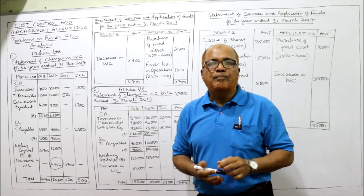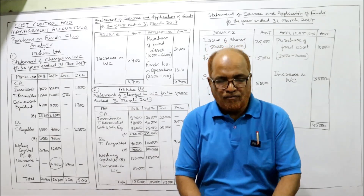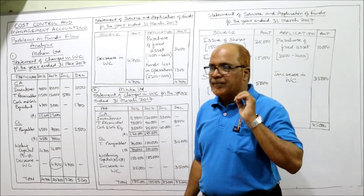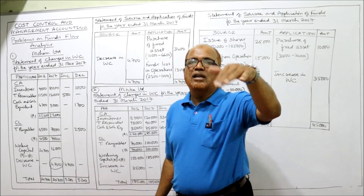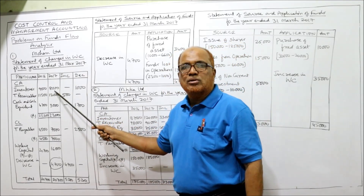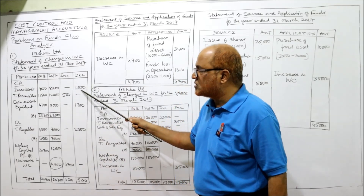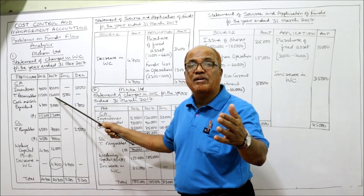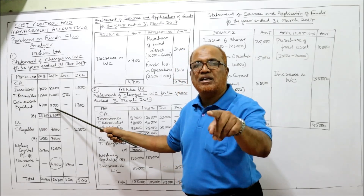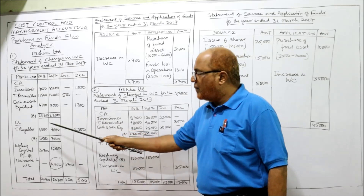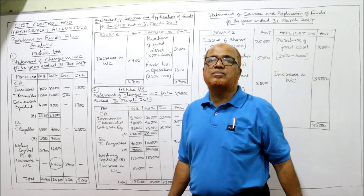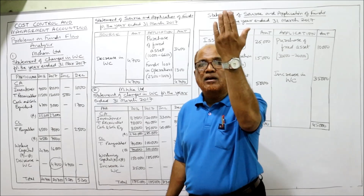To confirm whether our answer is correct, we open increase and decrease columns. If there is an increase in current asset, it is an increase in working capital. If decrease in current asset, it is a decrease in working capital. Inventories: last year 9,000, current year 8,000 — decrease by 1,000, so decrease column 1,000. Trade receivable: last year 11,500, current year 12,000 — increase by 500, so increase column 500. Cash: last year 4,700, current year 3,000 — decrease by 1,700, so decrease column 1,700. For current liability, the opposite rule applies: if increase in current liability, it is decrease in working capital. Trade payable: last year 4,500, current year 7,000 — increase in current liability, so decrease column 2,500.